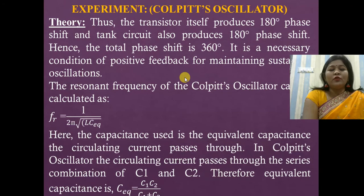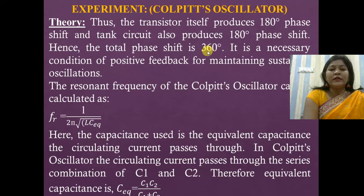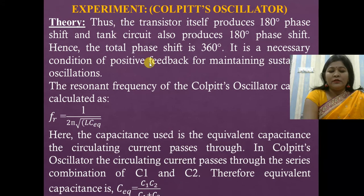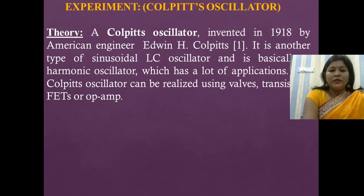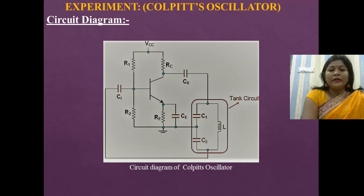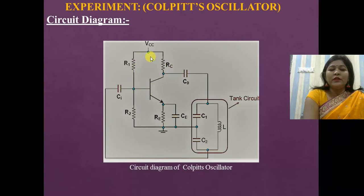All oscillators are based on the Barkhausen criteria. The basic principle is that the total phase shift required is 360 degrees. In the Colpitt's oscillator, the transistor itself produces a 180 degree phase shift, and the tank circuit acts as a feedback network providing another 180 degree phase shift, giving a total phase shift of 360 degrees.